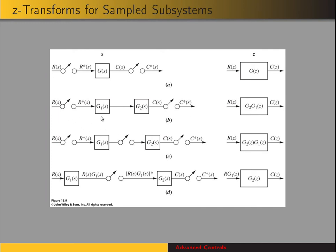Another scenario is we have a sampled input to G1 of S. Its continuous output goes to G2 of S, and then the output C of S is sampled. The Z-transform of this subsystem is the Z-transform of the product of G2 and G1. We take these products in the S domain — G1 times G2 — and then take the Z-transform of that product, which gives us the Z-transform of this subsystem.